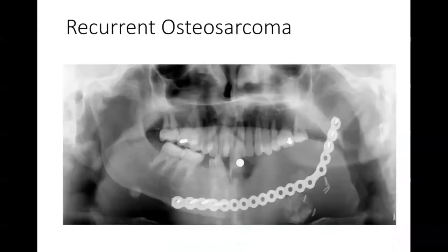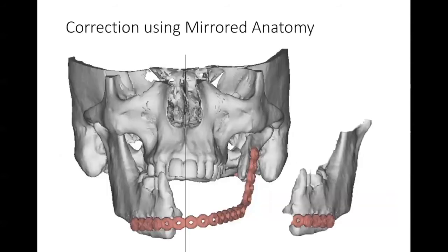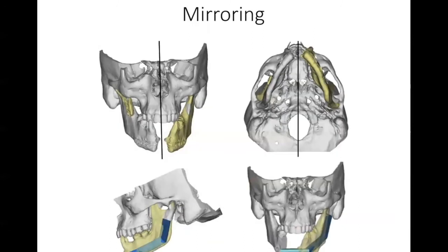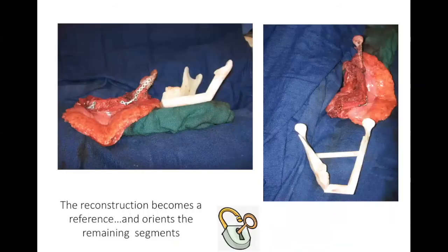Here's a case example. This patient was previously reconstructed with a recon bar only and no fibula flap, and his osteosarcoma has recurred at the left mandibular body. We bisect the skull and make a mirror image of the native anatomy on the right, using its chiral or opposite image to determine what's missing on the patient's left side. We then have a better picture of what was surgically removed and plan the virtual surgical reconstruction with blue fibula segments. The reconstruction serves as a reliable and predictable reference — the lock and key concept — so the remaining native mandible can be aligned to the fibula flap.